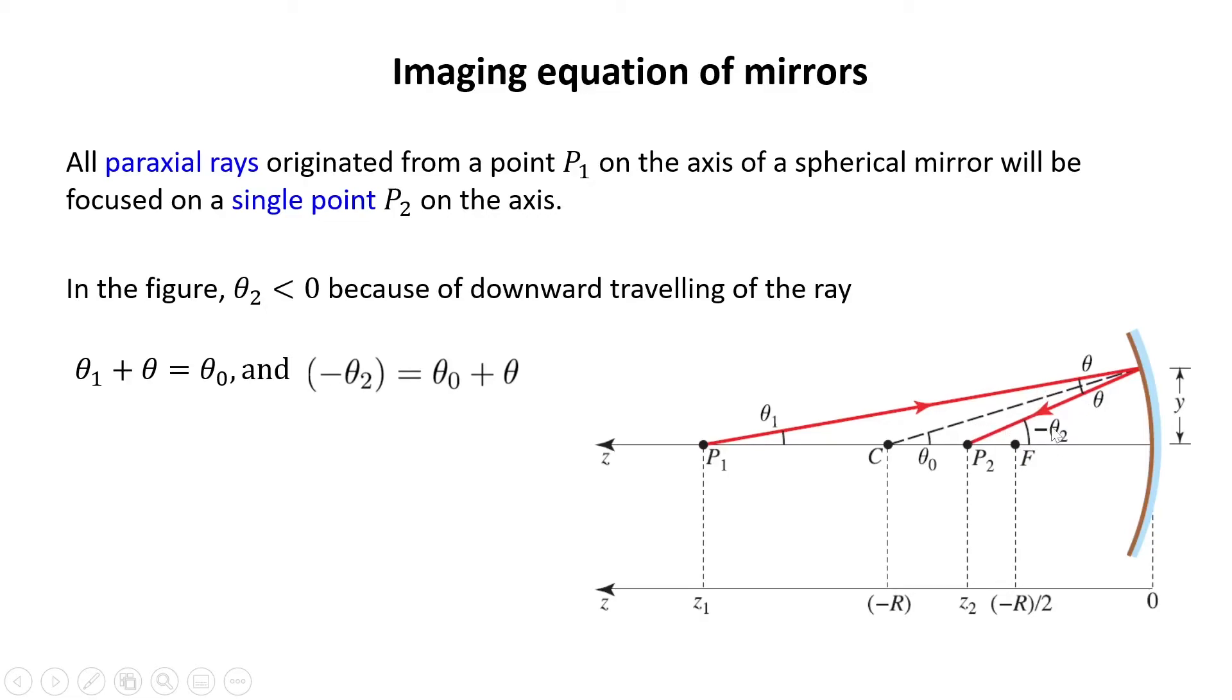Also here, minus theta 2 is an external angle with respect to this triangle. So minus theta 2 is theta 0 plus theta. From these two, I can conclude that minus theta 2 plus theta 1 is 2 theta 0.